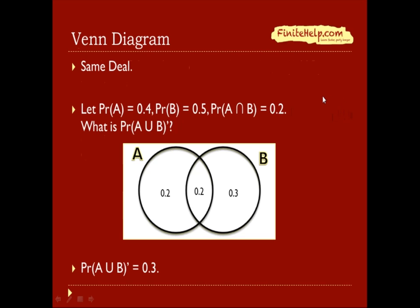In Venn diagrams, again, this is the same deal, it's just in probability. So let's look at this example. Probability of A is 0.4, probability of B is 0.5, and probability of A intersect B is 0.2. So just like we did in 1.3, start in the middle, so the middle is 0.2,